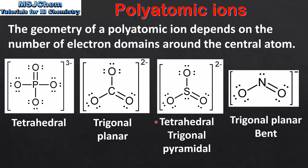Next we have the sulfate four ion, which is also known as the sulfite ion. Around the central sulfur atom there are four electron domains: three bonding domains and one non-bonding domain. The electron domain geometry is tetrahedral and the molecular geometry is trigonal pyramidal. Finally we have the nitrite ion. There are three electron domains around the central nitrogen atom — two bonding domains and one non-bonding domain. The electron domain geometry is trigonal planar and the molecular geometry is bent or v-shaped.